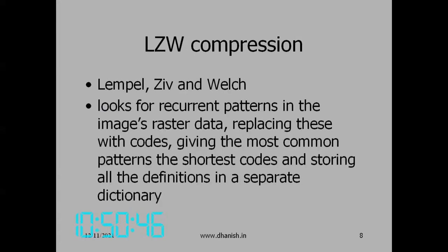In LZW, the algorithm looks for recurring patterns in the image's raster data — the pixel matrix. It replaces these with codes, giving the most common patterns the shortest codes, and storing all the definitions in a separate dictionary. You find out which patterns are repeated, make a list — that is your dictionary — and together, all these dictionary entries can cover and reconstruct the original data. That is LZW compression.